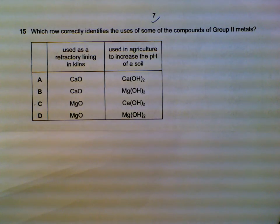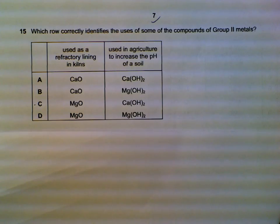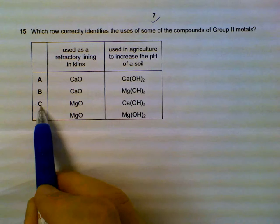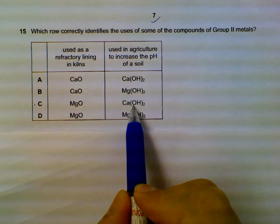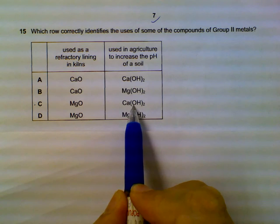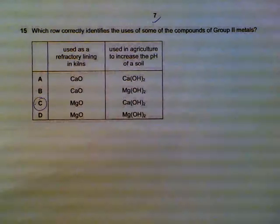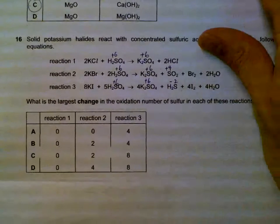Question 15: uses of calcium oxide, hydroxide, magnesium oxide, and hydroxide. This is more of a recall question. Magnesium hydroxide is used as a refractory lining, and calcium hydroxide is what we use to raise the pH of acidic soil.